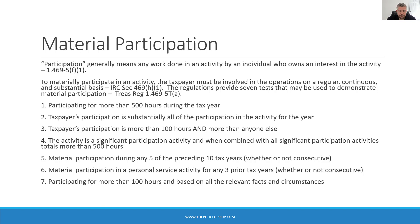Test 4 says the activity must be a significant participation activity when combined with all significant participation activities totaling more than 500 participation hours for the year. A significant participation activity is any trade or business activity in which you participated for more than 100 hours during the year and in which you didn't materially participate under any of the other material participation tests. You can pass Test 5 by showing material participation in 5 of the preceding 10 years, whether or not consecutive. Test 6 can be passed by materially participating in a personal service activity for any three tax years, whether or not consecutive.